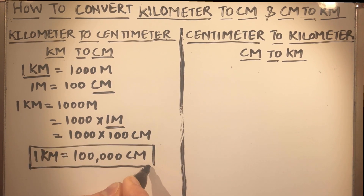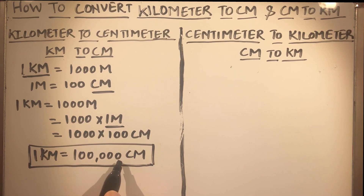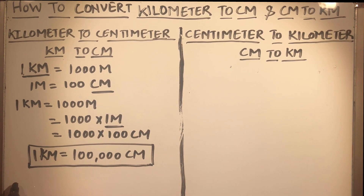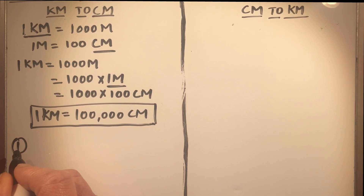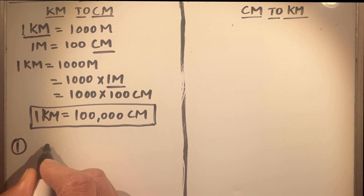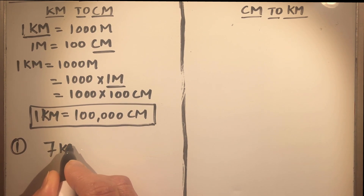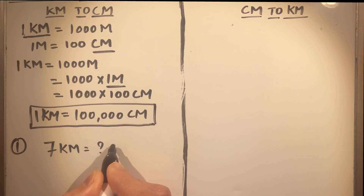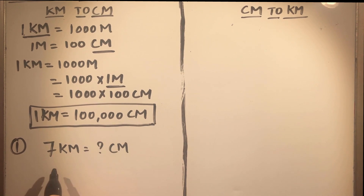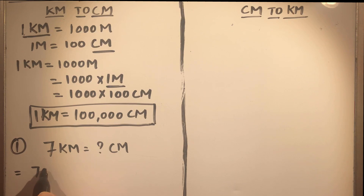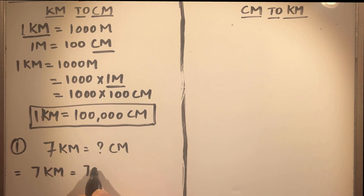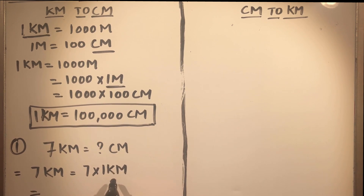So one kilometer equals one hundred thousand centimeters. This is the relation we will use to convert from kilometers to centimeters. For example, suppose we need to convert seven kilometers to centimeters. We write seven kilometers as seven times one kilometer.